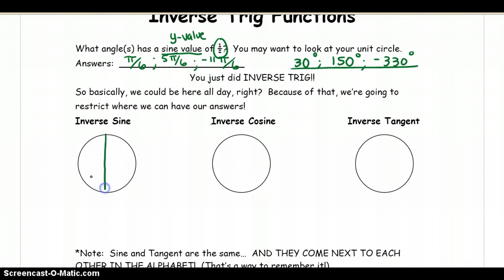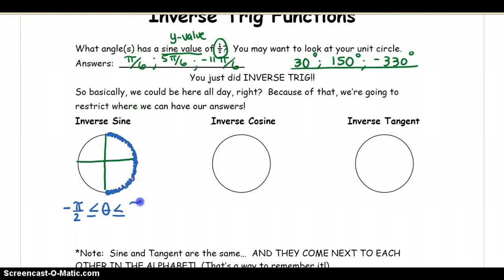For inverse sine — imagine this unit circle — when we do inverse sine, meaning when we ask what angle has a sine of a certain number, the answers we want should be in either quadrant 1 or quadrant 4. So basically we limit our angle theta to be between negative π over 2, which is the same as negative 90 degrees, to π over 2, which is 90 degrees.